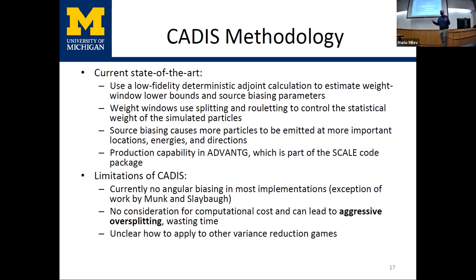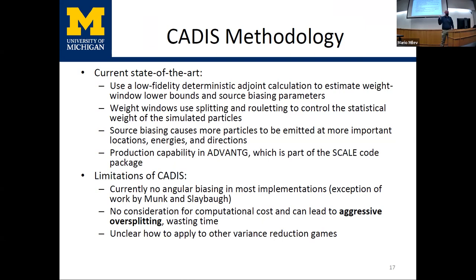The current state of the art for automated variance reduction is a method called CADIS — Consistent Adjoint-Driven Importance Sampling. It uses a low-fidelity deterministic solution to provide weight window parameters that combine splitting and rouletting together. Using that, we can push particles to important regions of the problem more efficiently. In many problems, you can get factors of 100 to 1000 or more improvement in calculation performance.